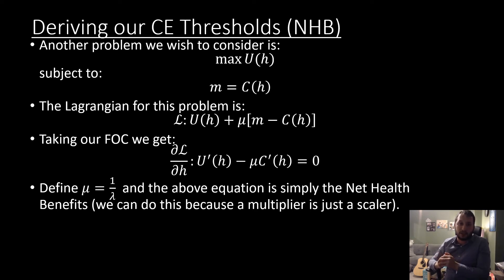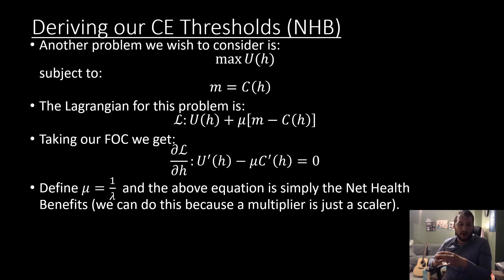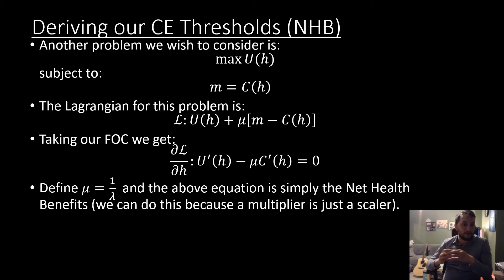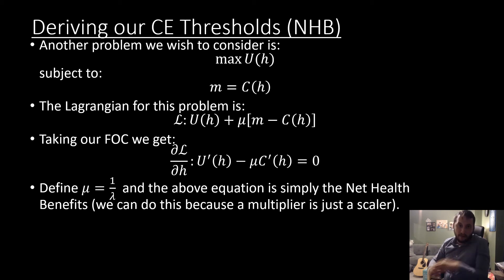That net health benefits formula comes from the inverse problem — a utility maximization problem subject to a budget constraint. The Lagrangian for this problem is defined as follows, and if we take our first order condition we get a very interesting result. We're going to find our nu here to be one over lambda. The reason we're able to do that is because our multiplier is just a scalar and we're able to define it in terms of a ratio of another scalar. So this solution concept still holds, and from our utility maximization problem we have the net health benefits here.